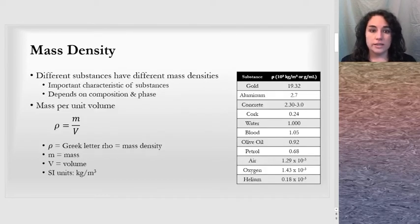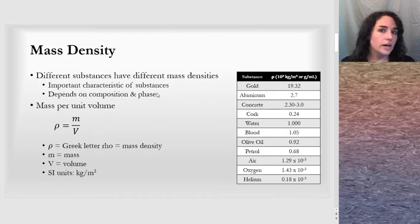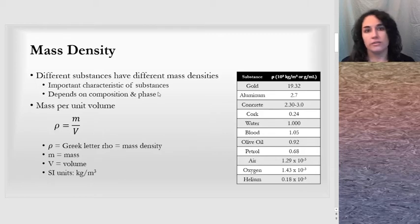The idea of mass density isn't too complicated. It's mass per unit volume, and you can see the equation there. Different substances have different density depending on the substance. It's an important characteristic of any substance, and it depends on the composition of the substance and the phase of the substance.